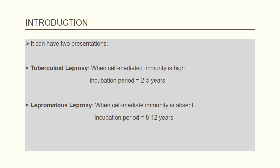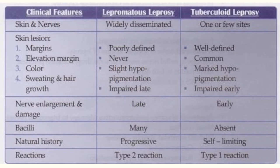Leprosy can have two presentations. When cell-mediated immunity is high, it presents as tuberculoid leprosy with an incubation period of two to five years. When cell-mediated immunity is absent, it presents as lepromatous leprosy with an incubation period of eight to twelve years. Further differences will be discussed in the next slides.